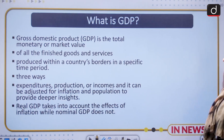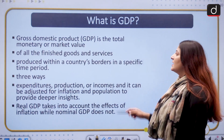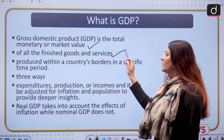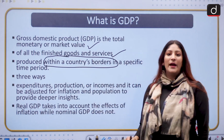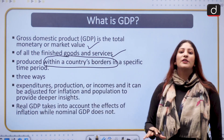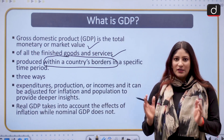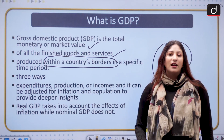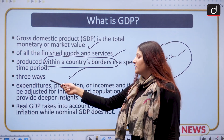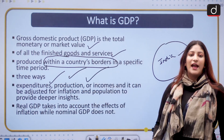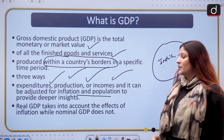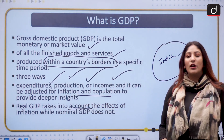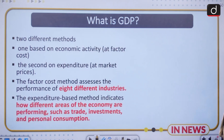Now if we talk about GDP — it is the total monetary or market value of all the goods as well as the services produced within a country's borders. It does not matter if a foreign entity is producing the goods or services, but if it is doing so within the geographical boundaries of India then it will be counted in GDP. We calculate it through three ways: first is expenditure, second is production, and third is income. It can be adjusted for inflation and population to produce deeper insights. Real GDP takes into account the effects of inflation while nominal GDP does not.